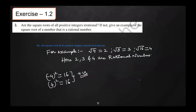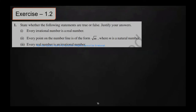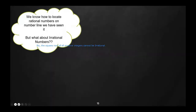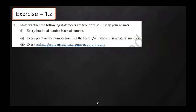A student (Ashish) asks about question 1, second statement: you said the square root of any natural number is always positive. Natural numbers are 1, 2, 3, 4, 5, 6, 7 — that is the family of natural numbers.